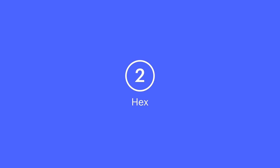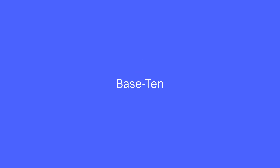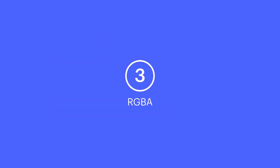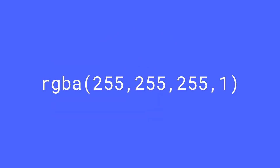Now, if hexadecimals aren't your thing, you don't need them. In fact, if you prefer to think numerically, you're in luck, because RGBA uses good old-fashioned base ten — normal numbers. What's after nine? Ten. What's after 99? One hundred. RGBA uses the values zero through 255 to represent each color.